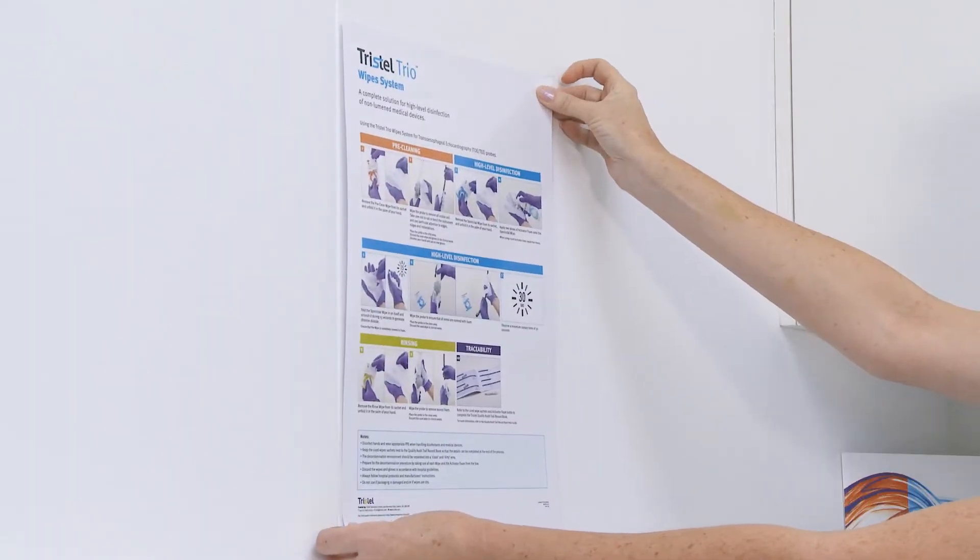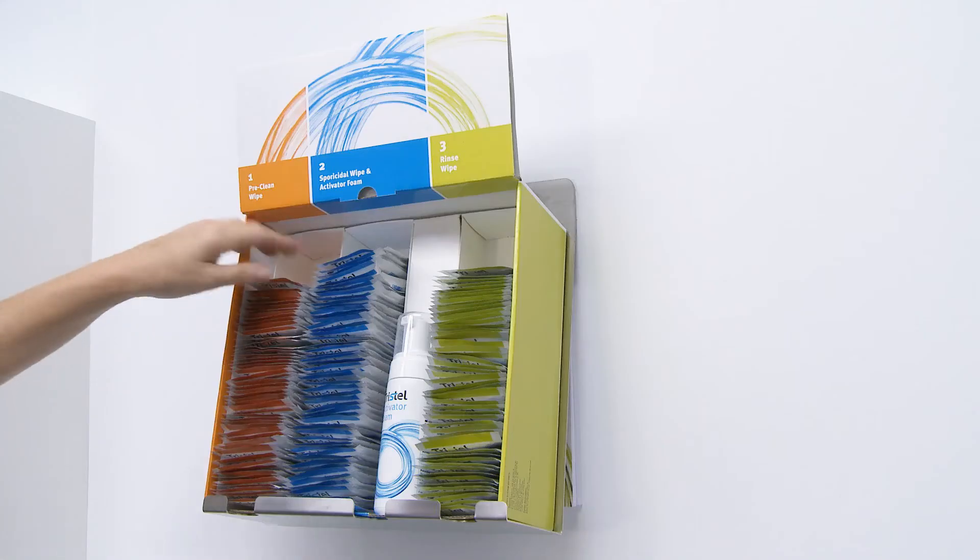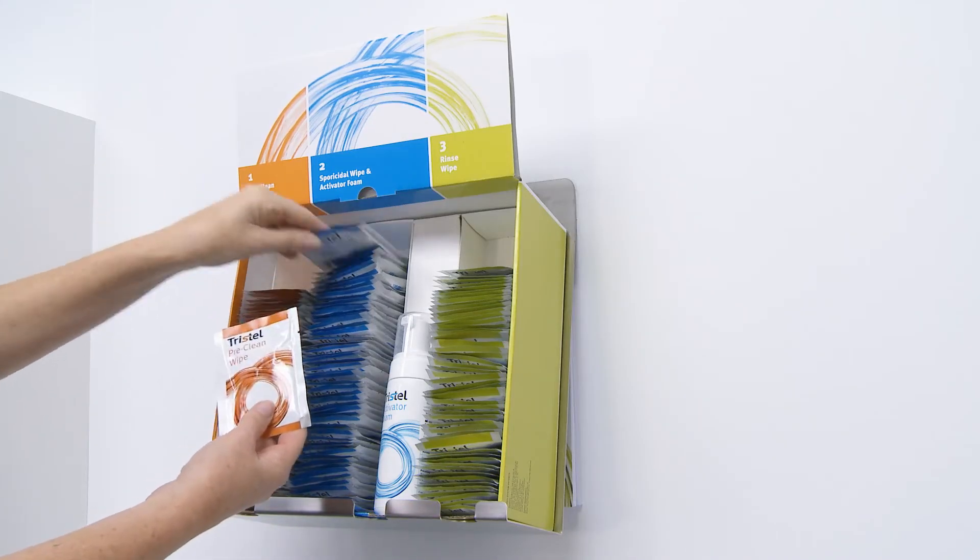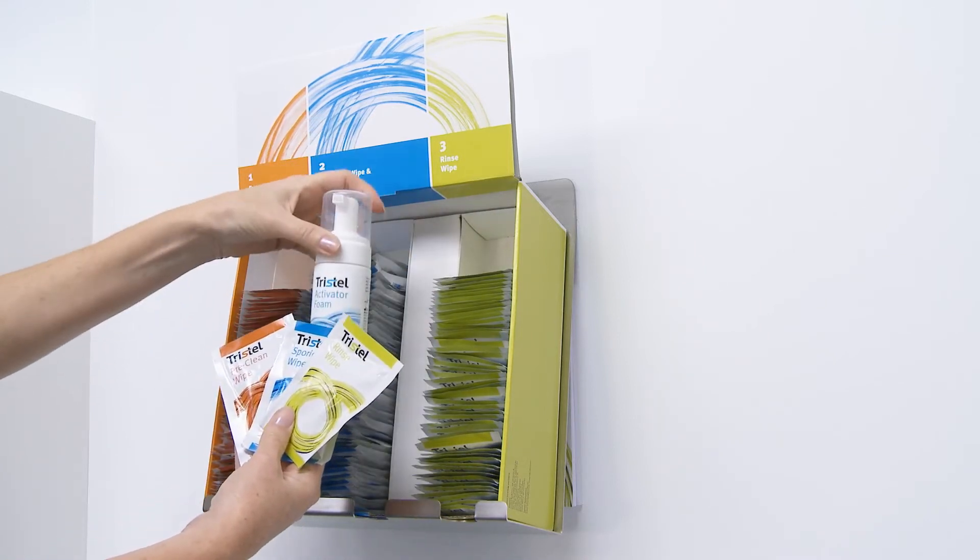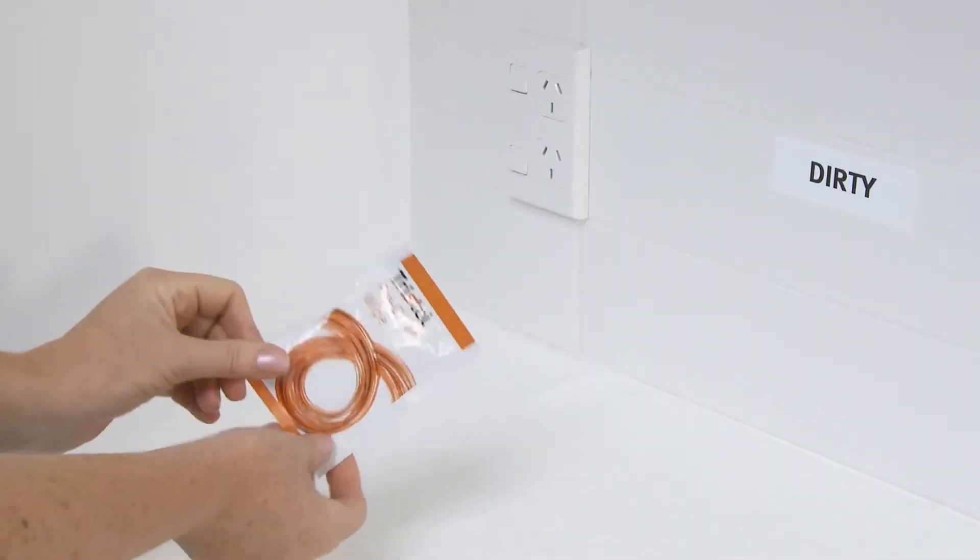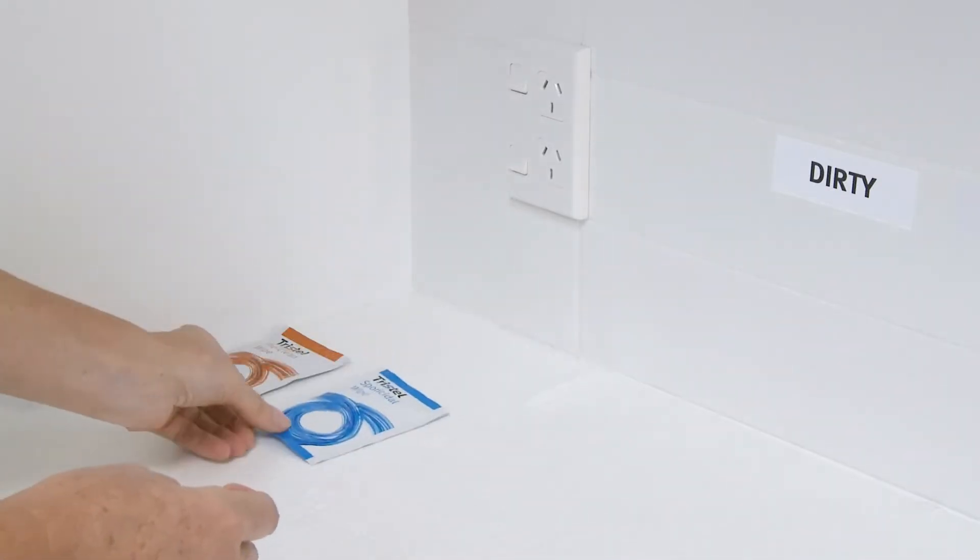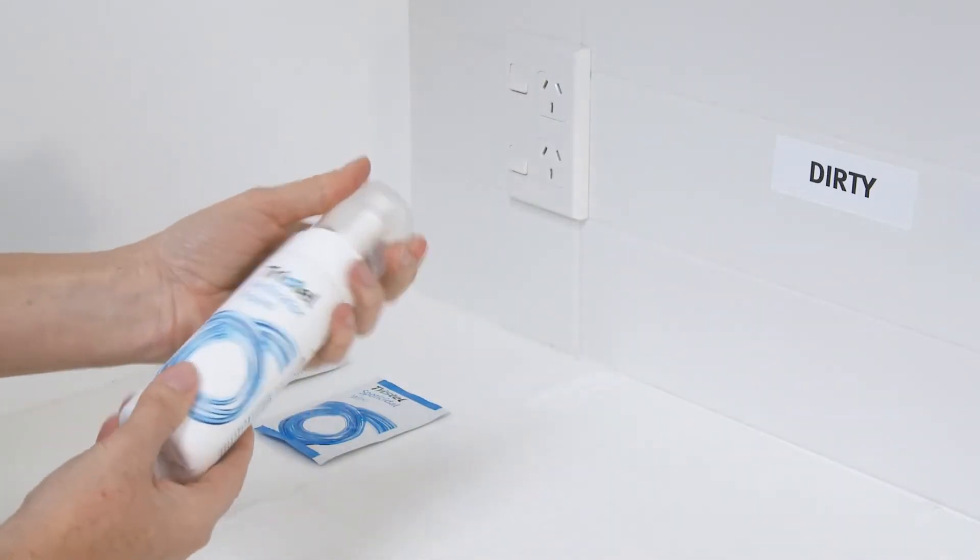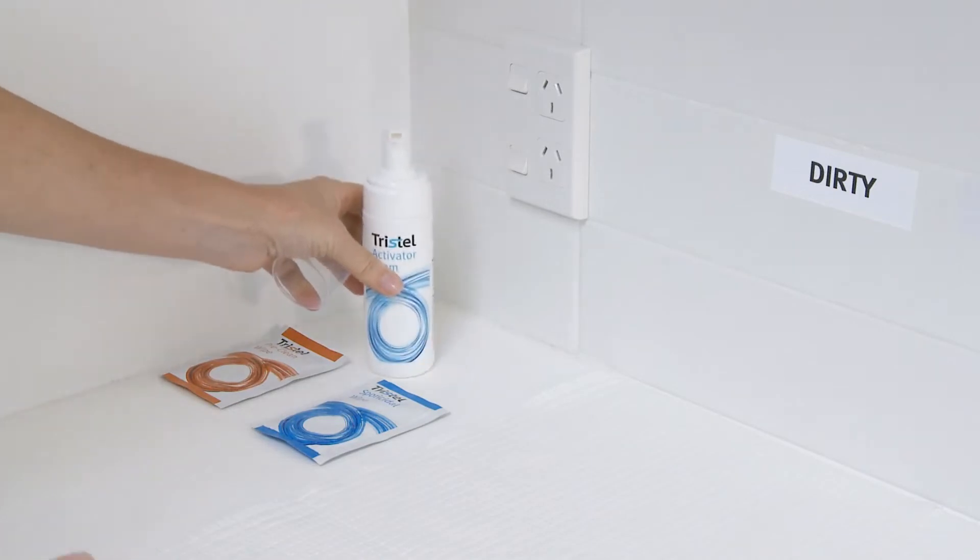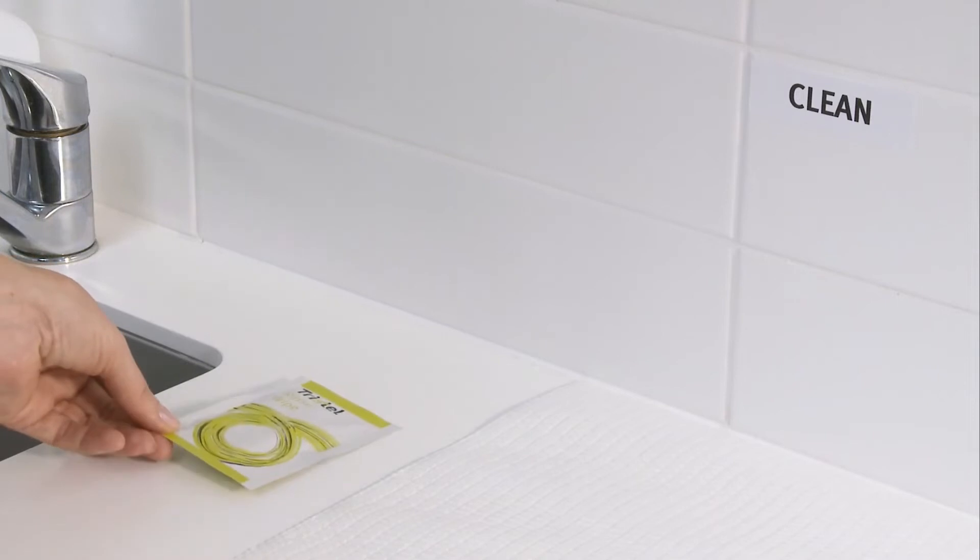A wall chart can be provided separately, which should be fixed in a prominent location. In preparation for the decontamination process, take one of each of the wipes and the Activator Foam Bottle from the box. Place the Pre-Clean Wipe, Sporicidal Wipe and Activator Foam near the dirty area and place the Rinse Wipe near the clean area.